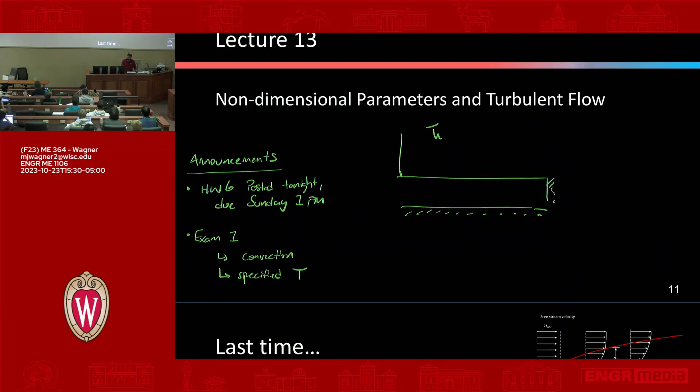And I said that there's convection and T infinity, and then there's this generation that's occurring, G dot, that's occurring inside the domain. So there were a lot of people who basically completely forgot about the convection part of it. So they went through and derived an expression involving generation.